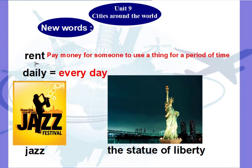The first word is 'rent.' Rent is a verb which means to pay money for someone to use a thing for a period of time. Rent, rented, rented. Next we have 'daily' — daily means every day. And here we have 'jazz' — jazz is a kind of music, a very famous kind of music.